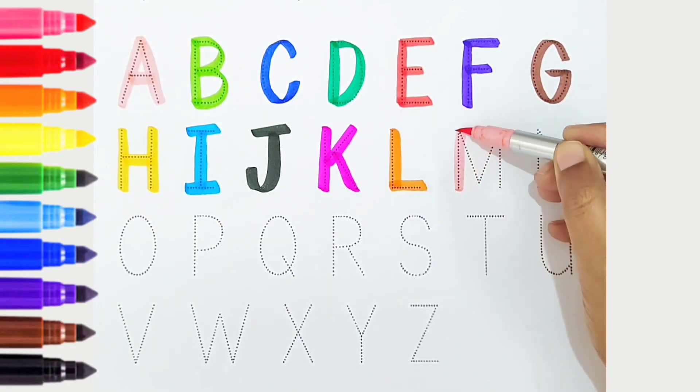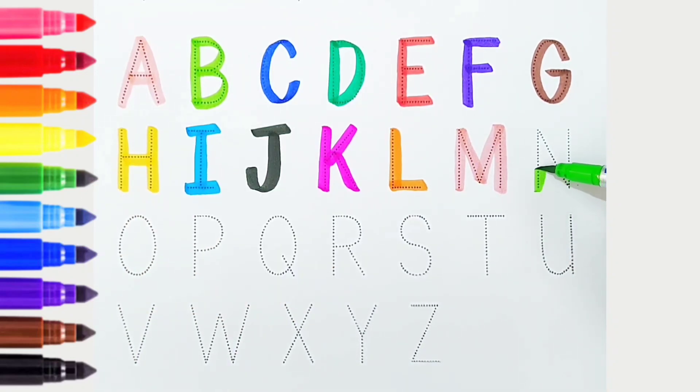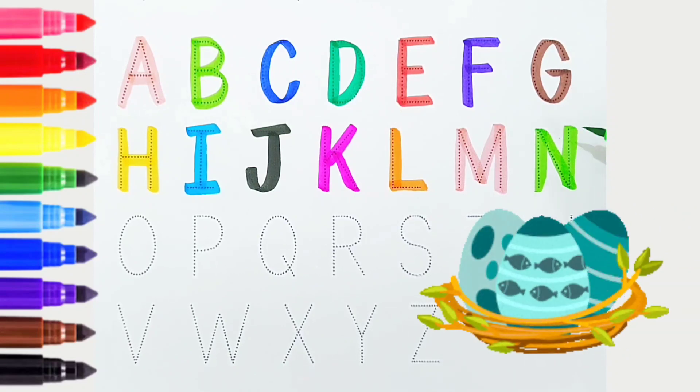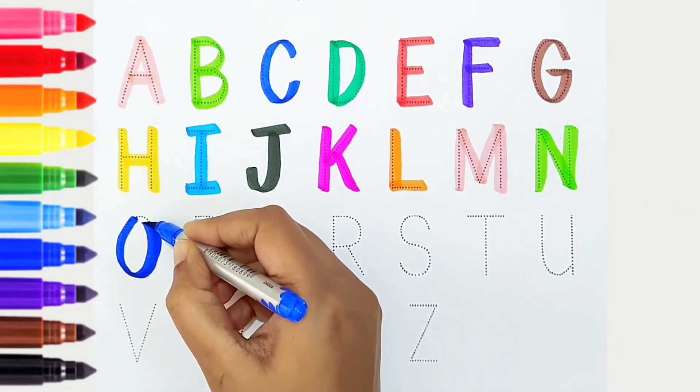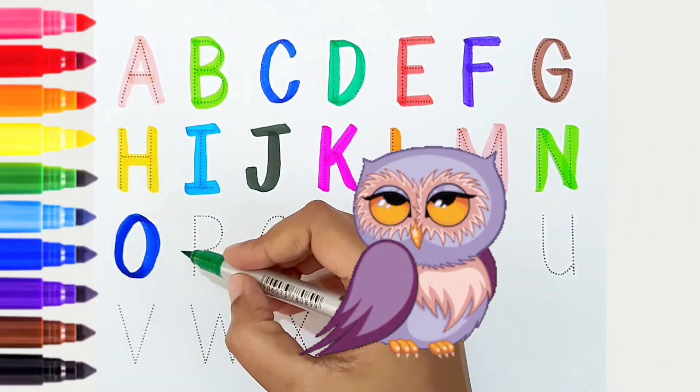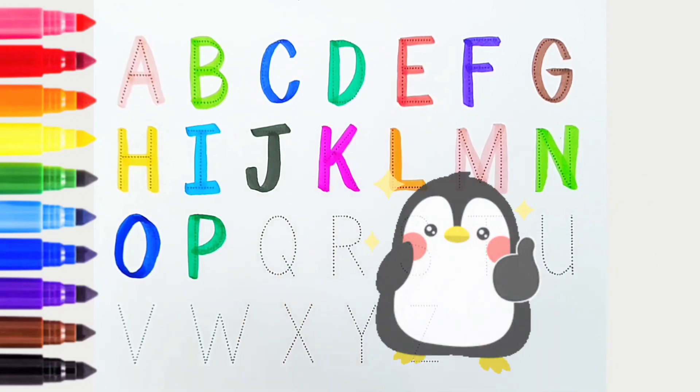M, light pink color, is for monkey. N, light green color, is for nest. O, dark blue color, is for owl. P, dark green color, is for pen.